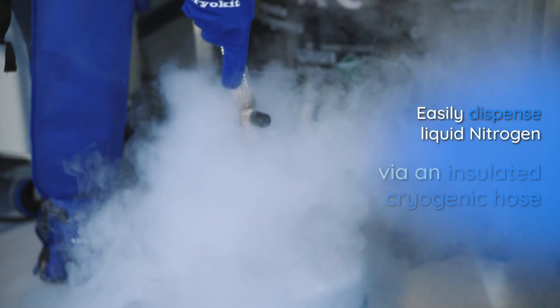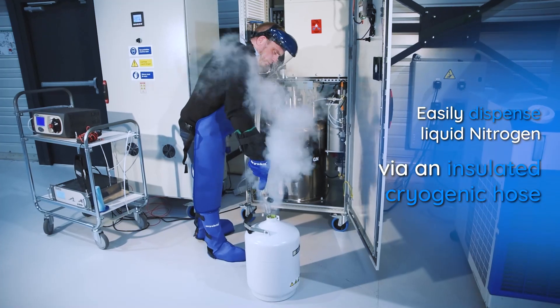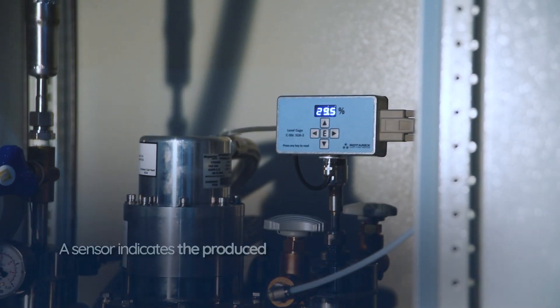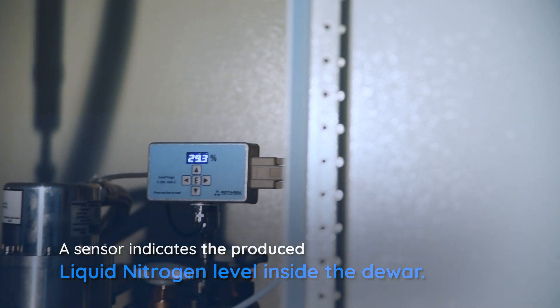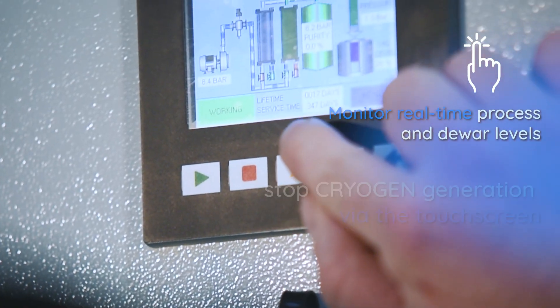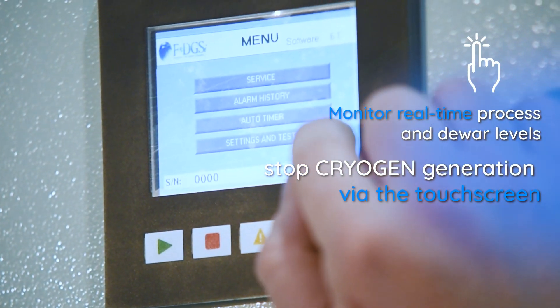Easily dispense liquid nitrogen via an insulated cryogenic hose. A sensor indicates the produced liquid nitrogen level inside the dewar. Monitor real-time process and dewar levels.